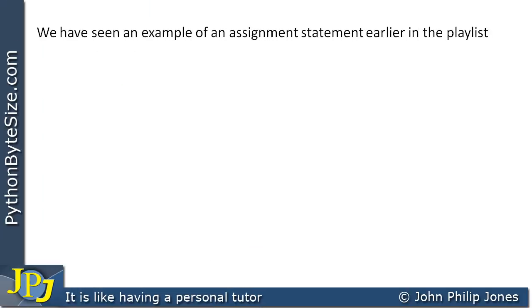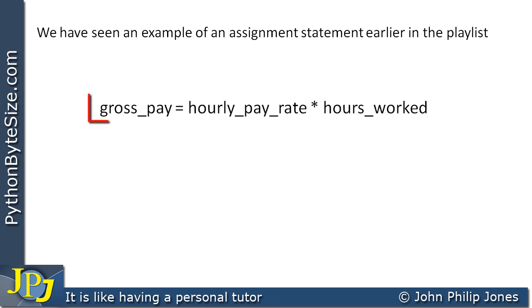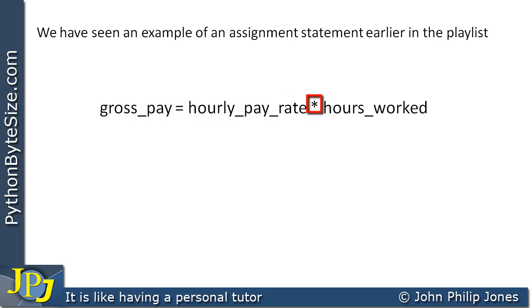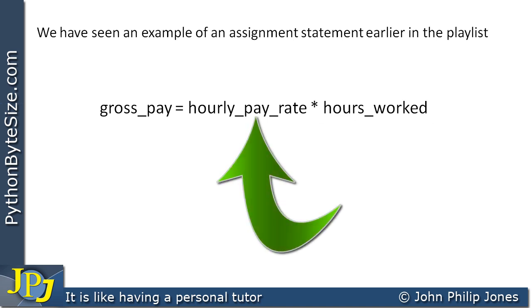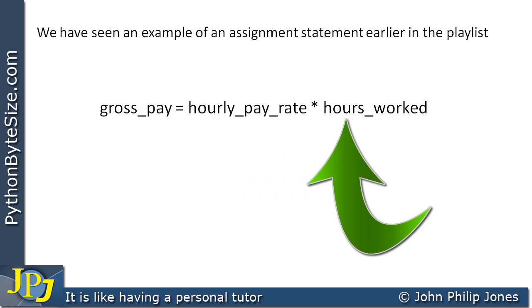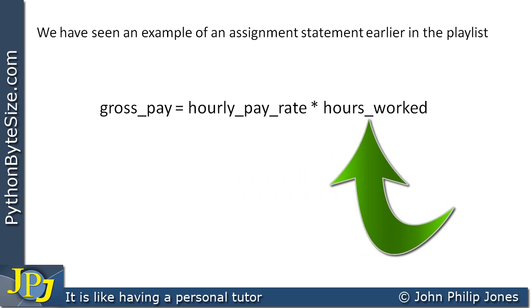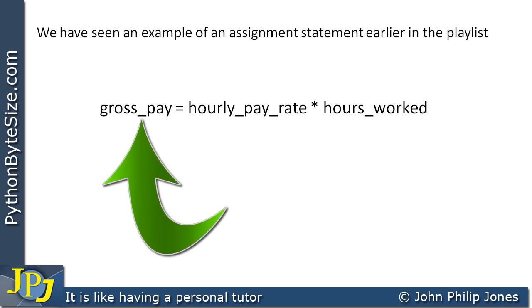We have seen an example of an assignment statement earlier in the playlist, and it says: gross pay equals hourly pay rate times hours worked. What this will do is multiply together the contents of the variable hourly pay rate by the contents of the variable hours worked, thus working out the gross pay for an employee, with the result being stored in the variable gross pay.